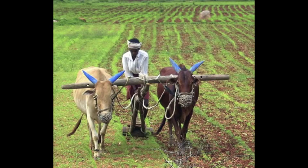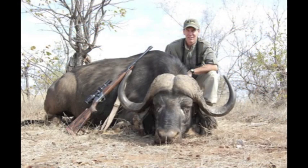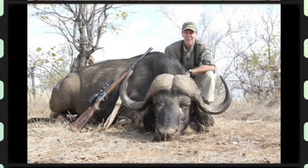The Neolithic Revolution was when people around the world started to farm and domesticate animals instead of hunting and gathering. Hunting and gathering took up too much time and was not able to provide for such a large population.